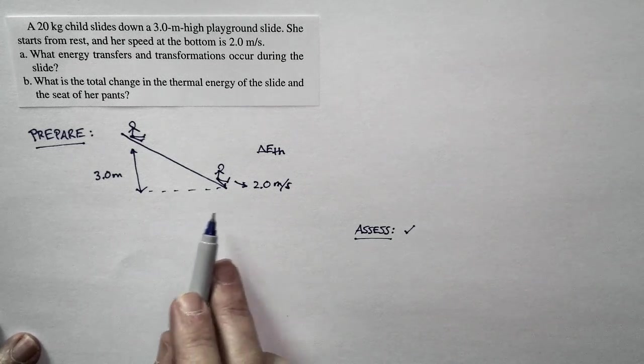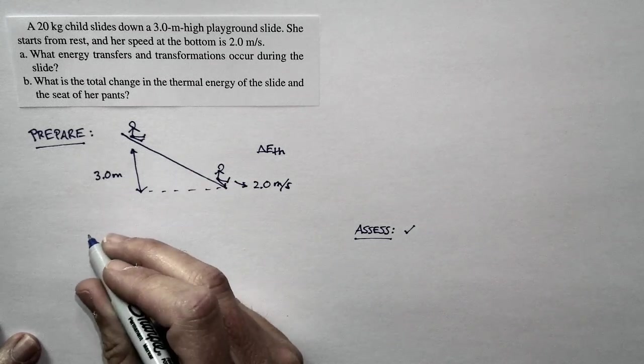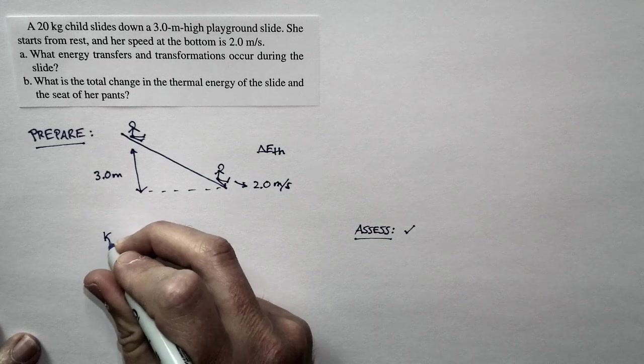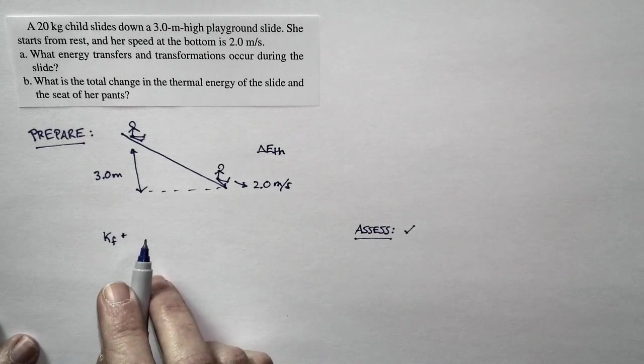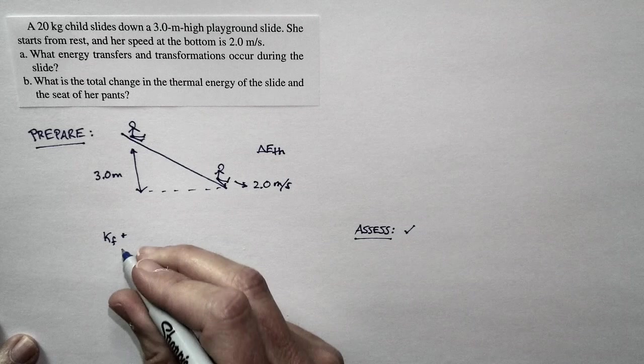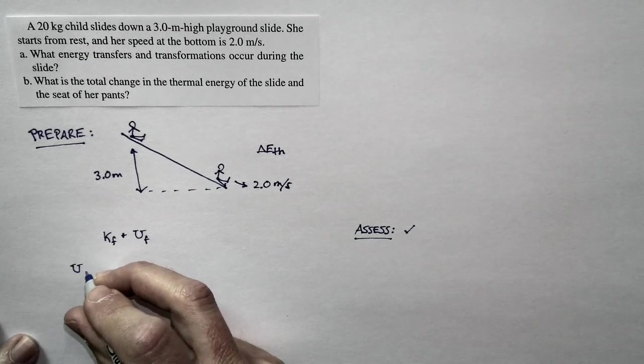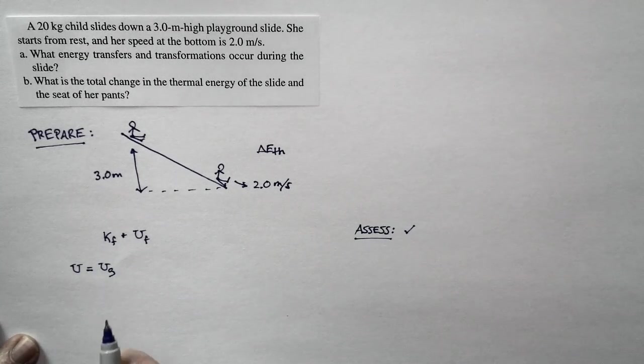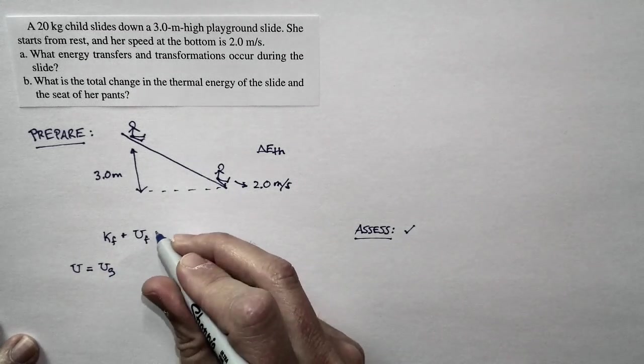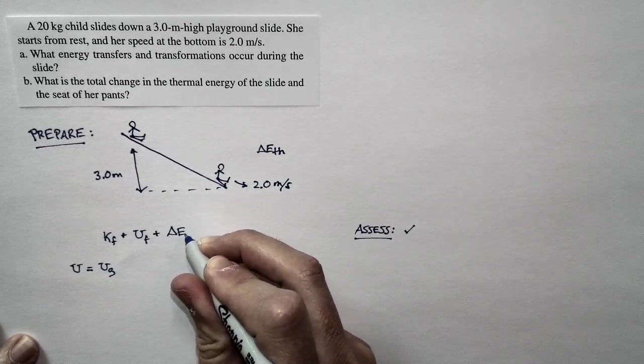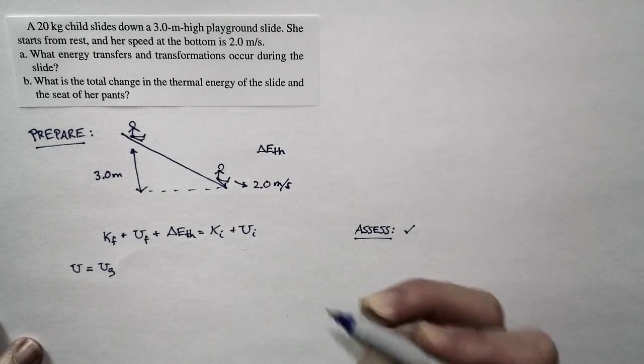We're going to assume this is an isolated system. There's nobody pushing her. Our basic rule for conservation of energy for an isolated system is: the kinetic energy plus the potential energy, and I'm writing U to mean gravitational potential energy because there isn't any spring potential energy. So her final kinetic energy plus her final potential energy plus the change in thermal energy is equal to her initial kinetic energy plus her initial potential energy.